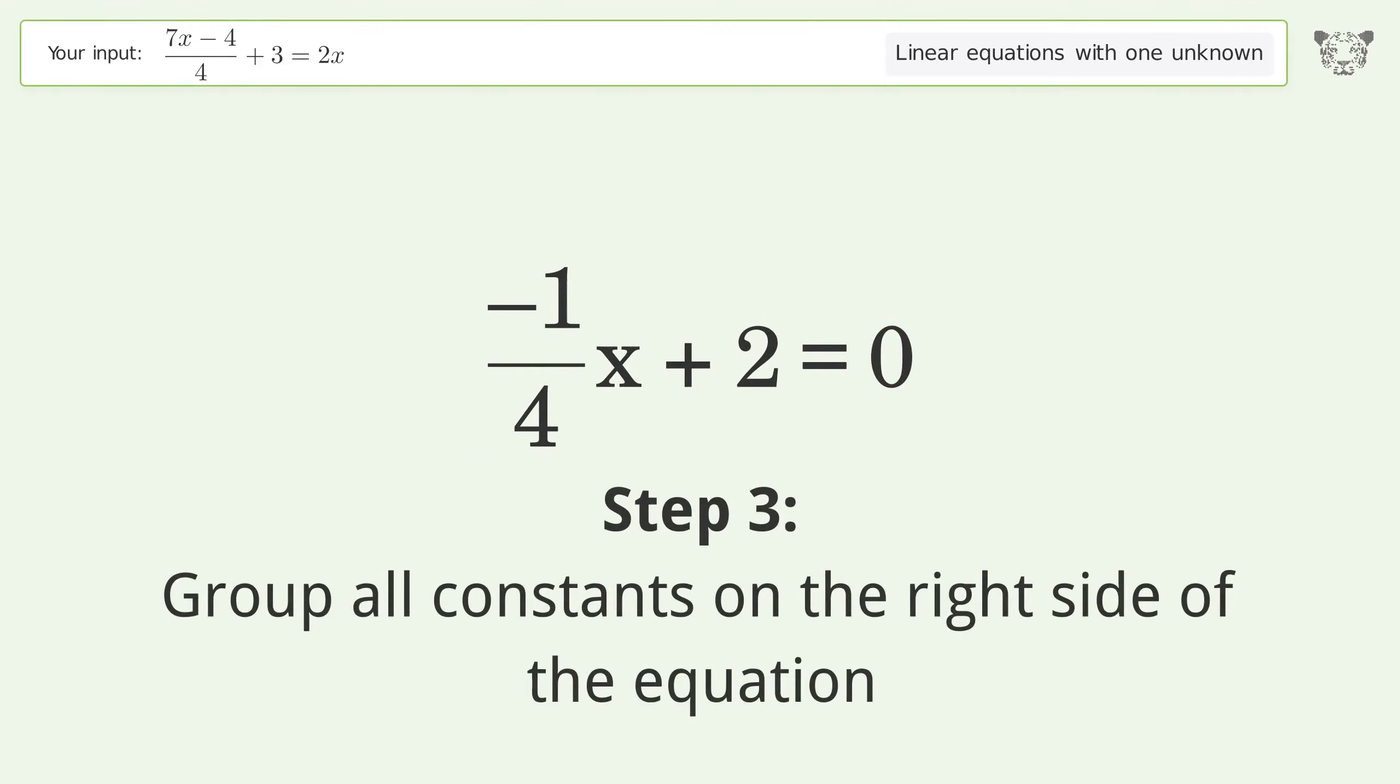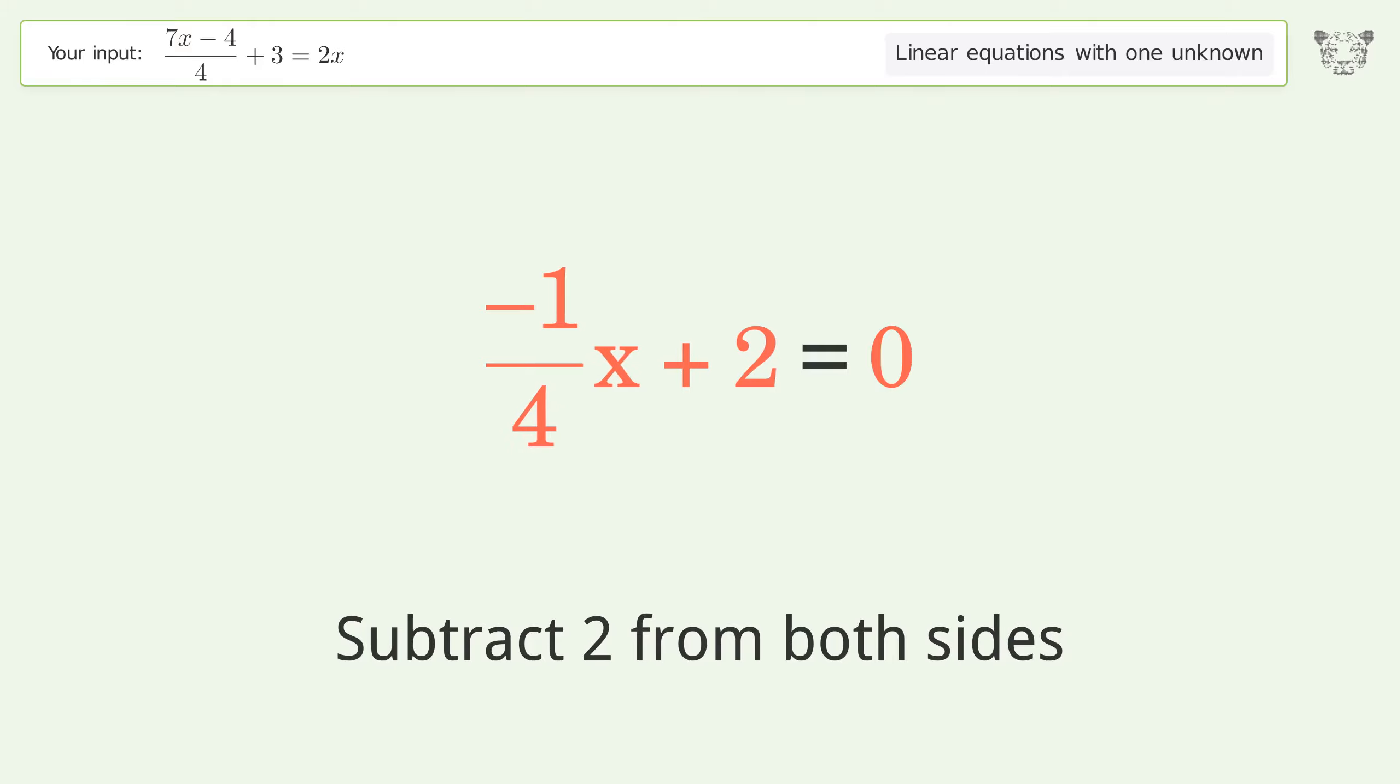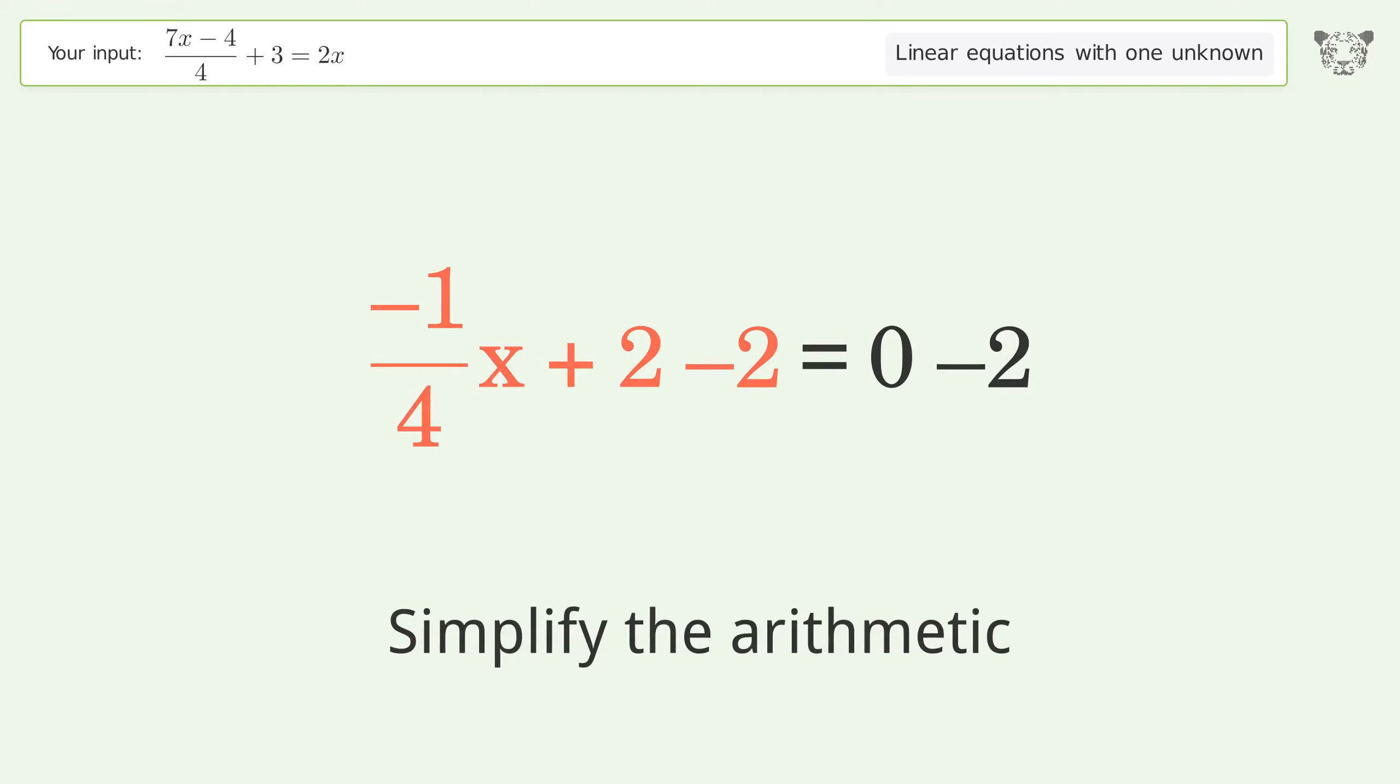Group all constants on the right side of the equation. Subtract 2 from both sides. Simplify the arithmetic.